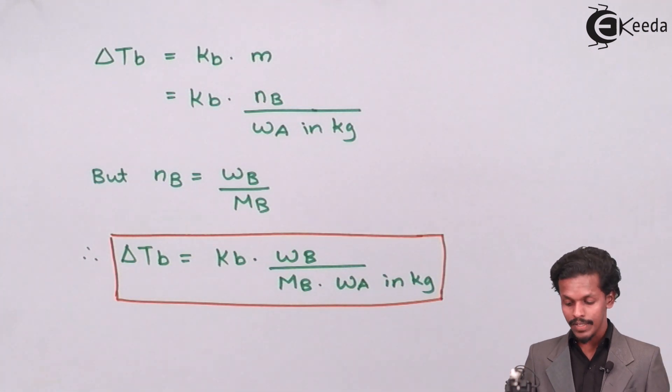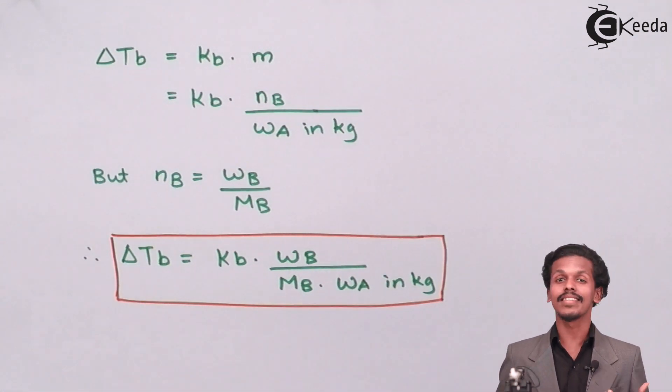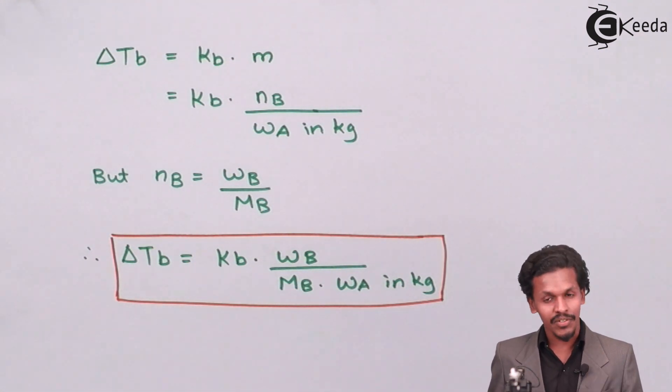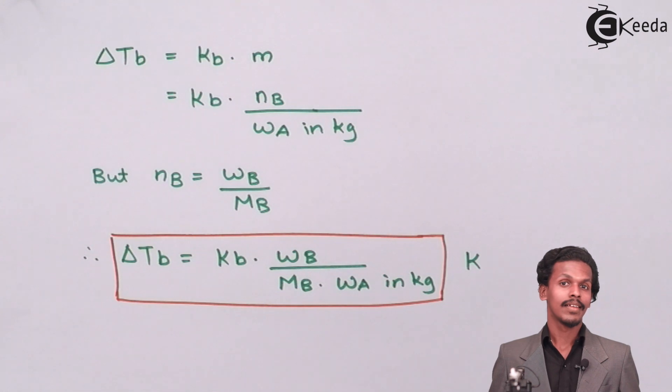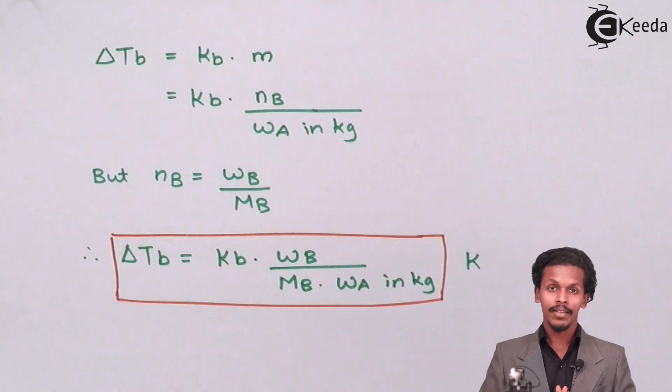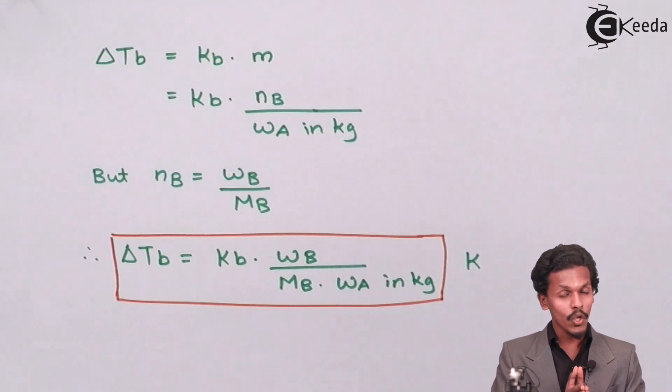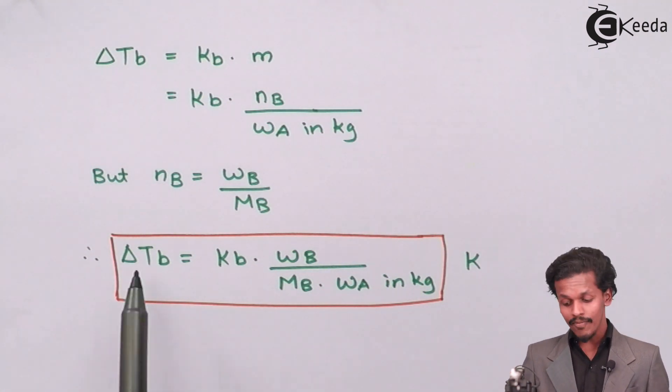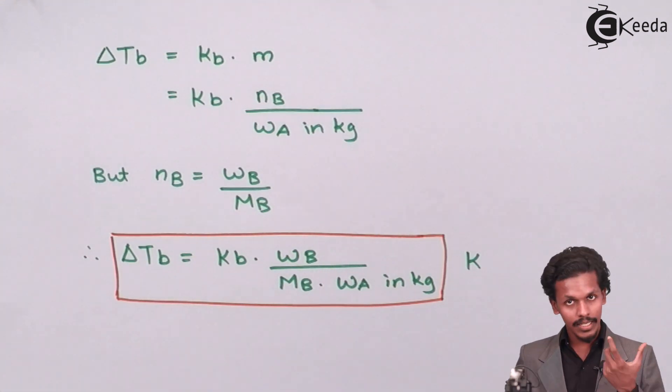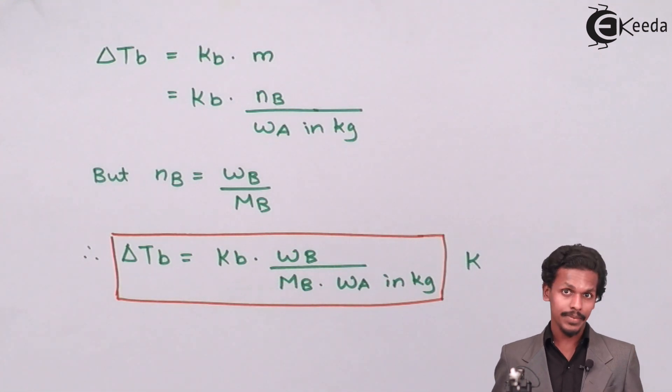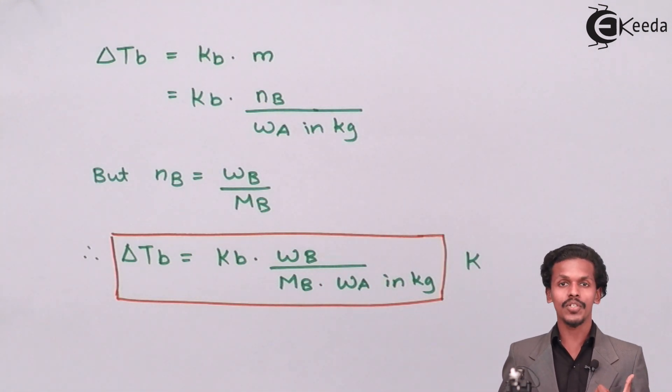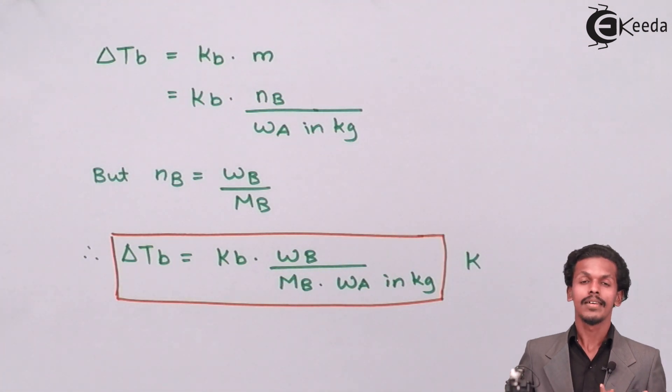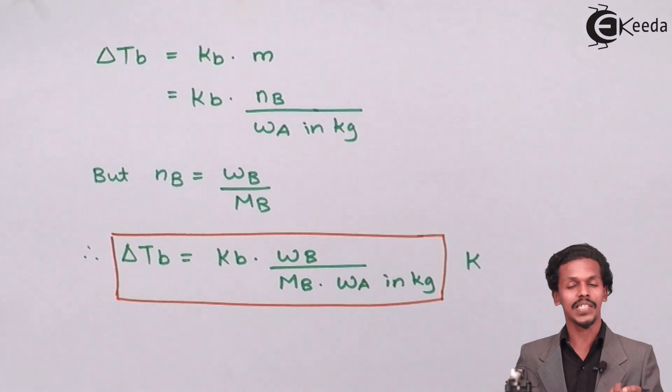The unit of delta Tb, since it is elevation in boiling point related to temperature, is kelvin. By this we describe the difference between the pure solvent and a solution's boiling point. This value will increase if the quantity of particles of solute increases. The more the number of moles of solute, the more will be the elevation in boiling point. There will be a huge difference if the concentration increases.